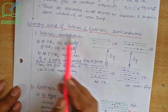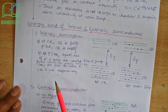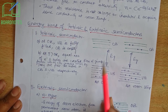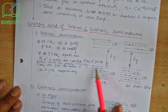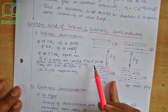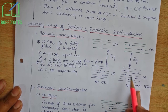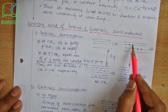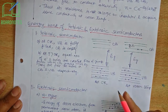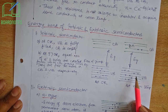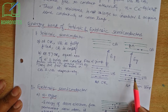Now let us talk of the energy band of intrinsic and extrinsic semiconductors. At 0 Kelvin the valence band is completely filled whereas the conduction band is empty. When temperature is increased, some of the electrons from the valence band jump to the conduction band and they are free to move. Holes are created in the valence band and holes can also move. Therefore, these intrinsic semiconductors can conduct electricity at room temperature or at higher temperatures.